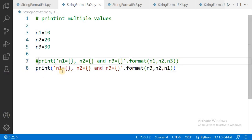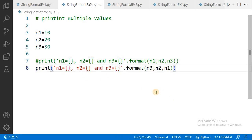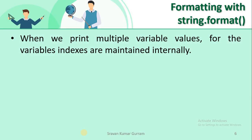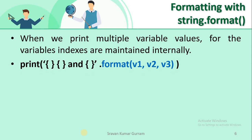Suppose you write the parameters in the format method out of order — for example n3, n2, n1 — then n3 value will be printed in the first replacement field, n2 in the second, and so on. When printing multiple variable values, Python internally maintains indices for those variables. If we write three replacement fields with three variable names in the format method, the values are printed in the same sequence. Python maintains indices for those variables starting from 0, incremented by 1.